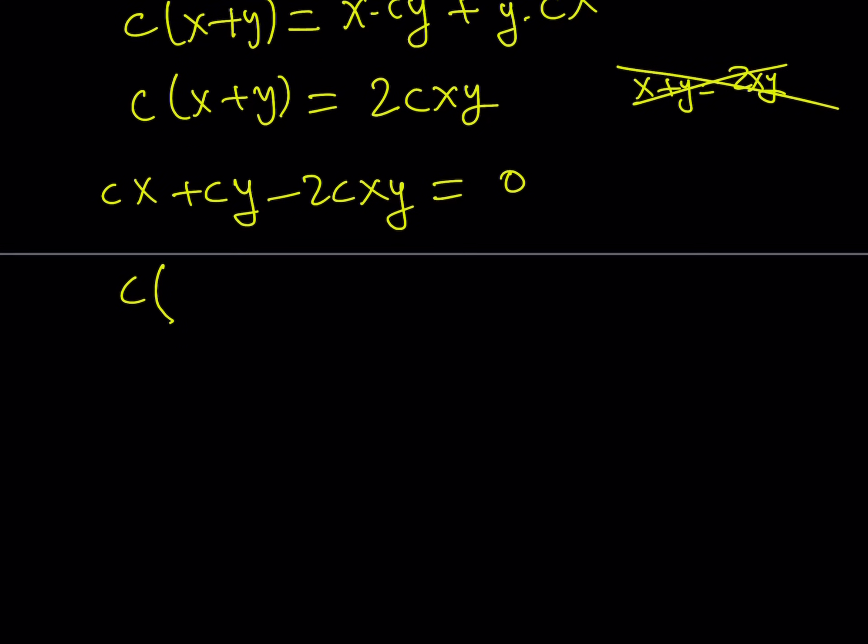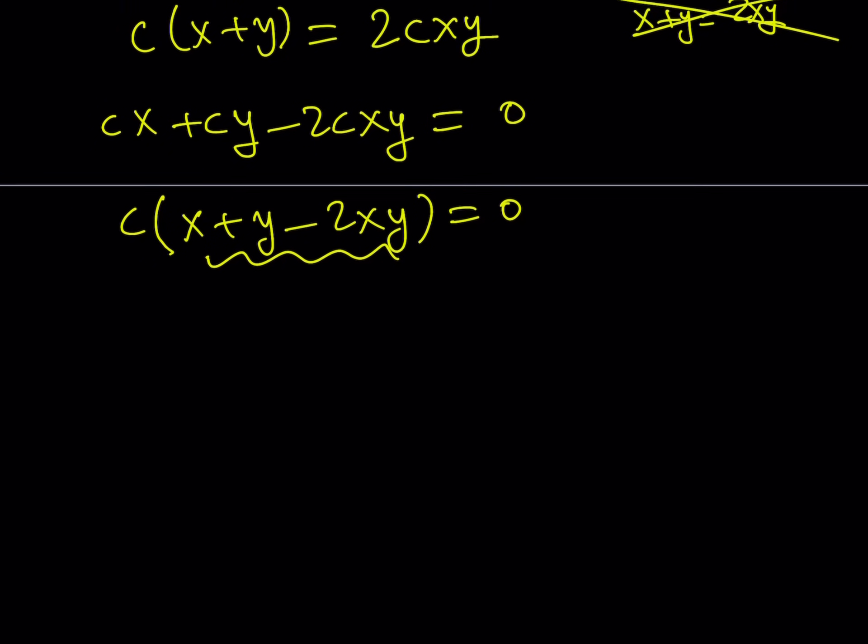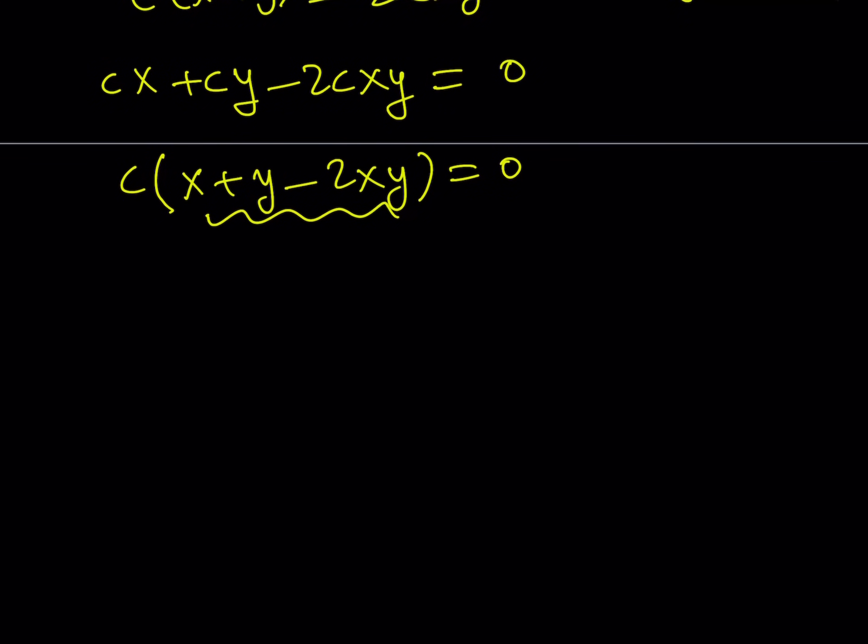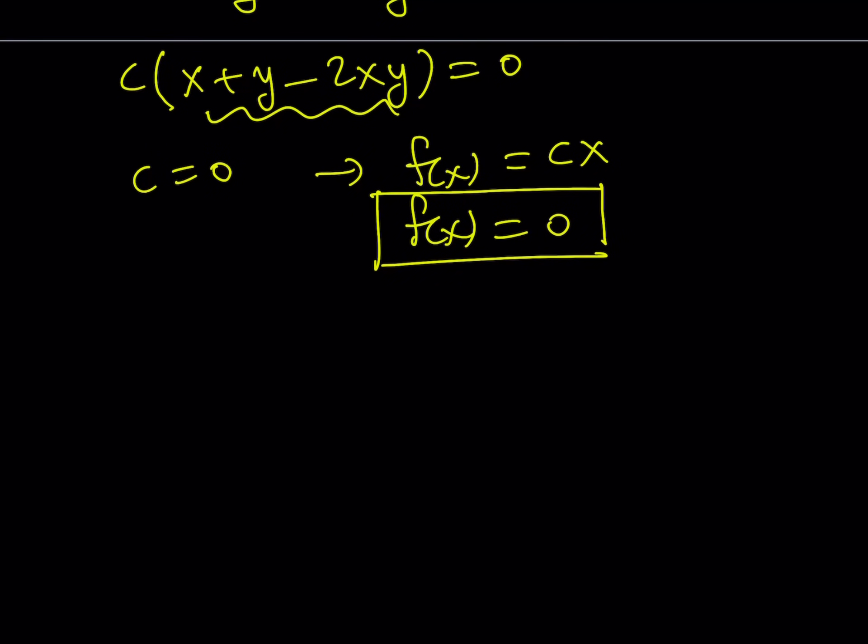Take it out. You get x plus y minus 2xy. Now, here's the critical part. The reason why you should not divide both sides by c is because you're not allowed to. C is 0. Why? Because for all possible values x and y, in order for this to be true, c has to be 0. But we assume that f(x) is in the form of cx. If c is 0, that means f(x) is always, always, always 0. I can't emphasize that enough. Alrighty?